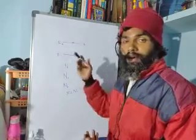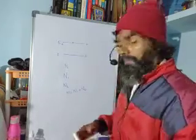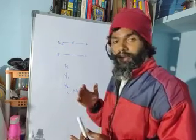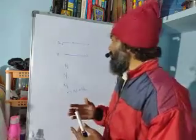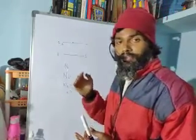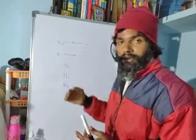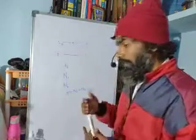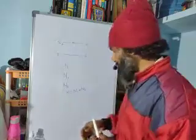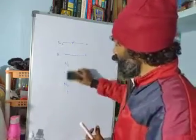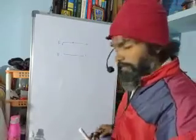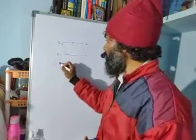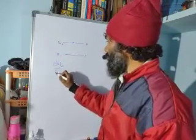We now go into the rate equation for the upper level, which involves three terms because we consider three primary processes in light-matter interactions: absorption of light between the two energy levels, spontaneous emission from the upper level, and stimulated emission of a photon from the upper level. Using these three processes, we write an equation for the rate of change of population of the upper level.